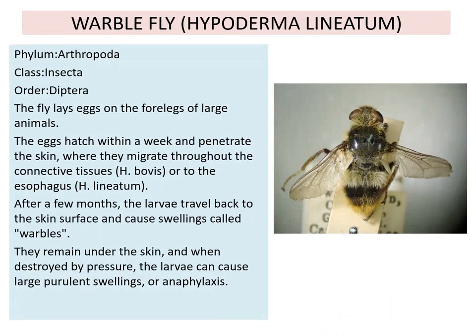The first insect is the warble fly, that is Hypoderma lineatum. Classification of warble fly: phylum Arthropoda, class Insecta, order Diptera, because it has got two wings only. It belongs to the order Diptera. The two wings are modified halteres which are used for balancing.